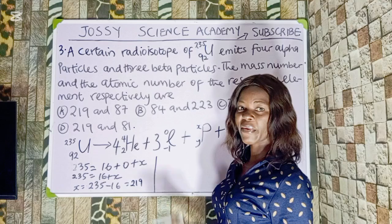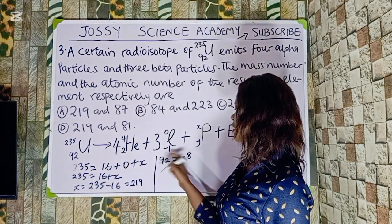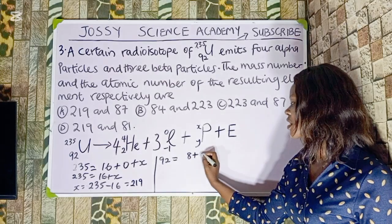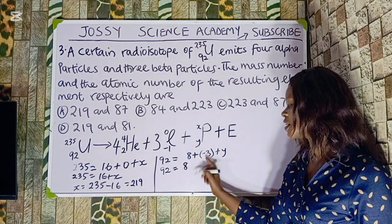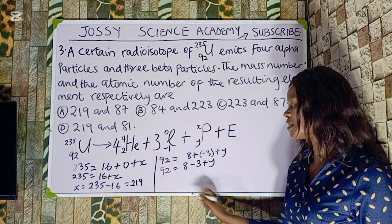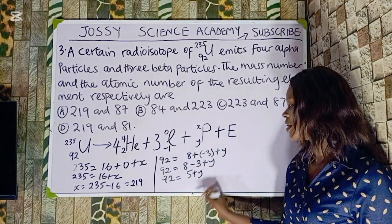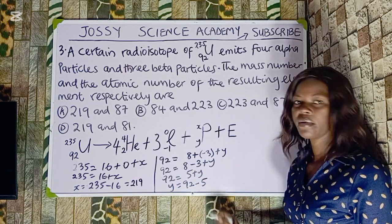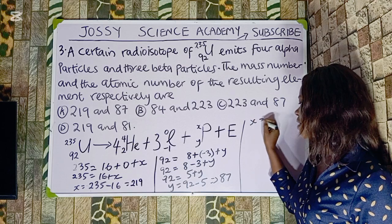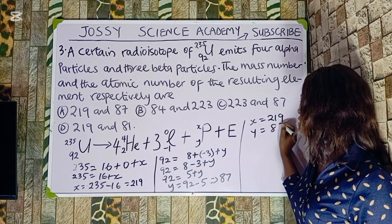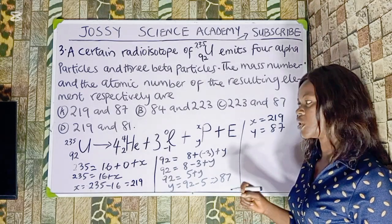For the atomic number: 92 equals 4 times 2 (which is 8) plus 3 times minus 1 (which is minus 3) plus Y. So 92 equals 8 minus 3 plus Y, which gives 92 equals 5 plus Y. Therefore Y equals 92 minus 5, giving Y equals 87. The mass number is 219 and the atomic number is 87. The correct option is option A.